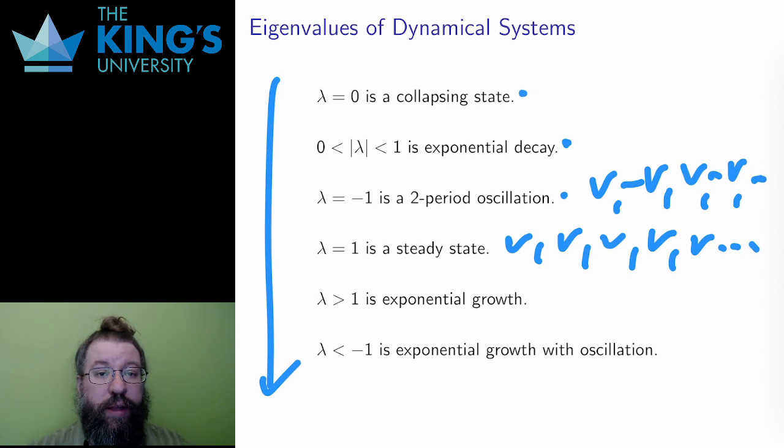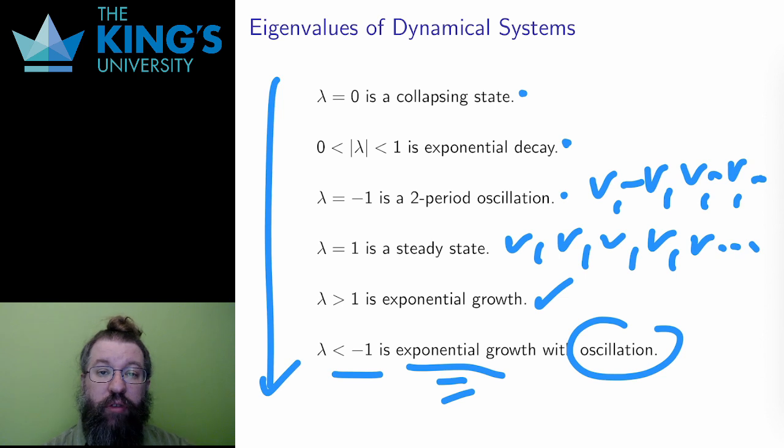If lambda is greater than one, then the state displays exponential growth. The long-term behavior of the system is exponential growth of the original vector. And finally, if lambda is less than negative one, the state displays exponential growth with an oscillation. The sign of the vector will flip back and forth, while the absolute value of the state quantities will grow exponentially.